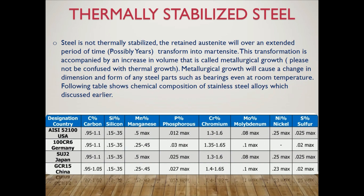In Germany: Carbon 0.95–1.1%, Silicon 0.15–0.35%, Manganese 0.25–0.45%, Phosphorus 0.03% max, Chromium 1.35–1.65%, Molybdenum 0.1% max, Nickel 0.25% max, Sulfur 0.02% max.